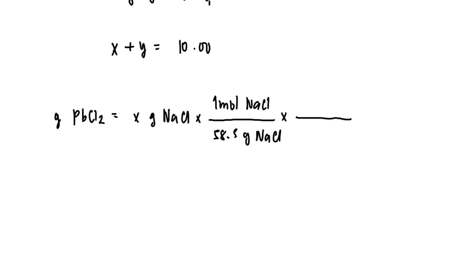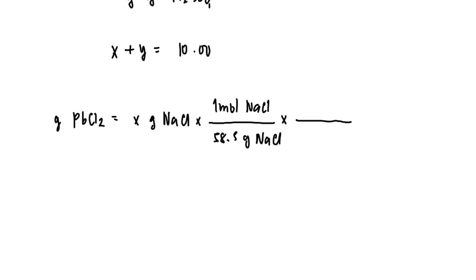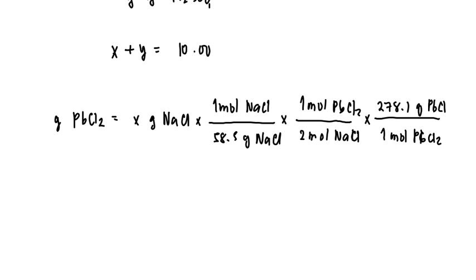From the relationship above, two moles of NaCl will form one mole of PbCl2. Finally, we multiply by the molar mass of PbCl2, which is 278.1 grams per mole. Solving this, we get the mass of PbCl2 in terms of x as equal to 2.377x.